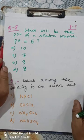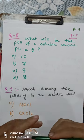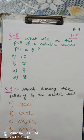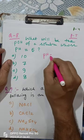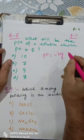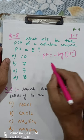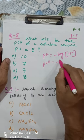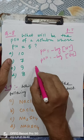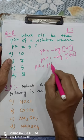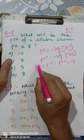Question eight: what will be the pOH of the solution whose pH is equal to 5? pH is defined as minus log of [H⁺] concentration, and pOH is minus log of [OH⁻] concentration. The important equation is: pH + pOH = pKw = 14.